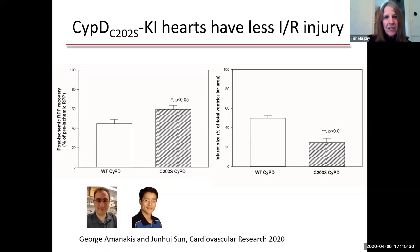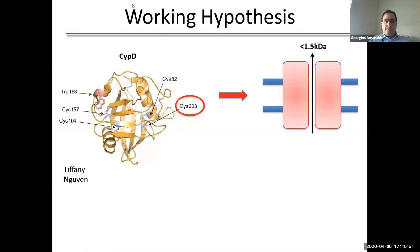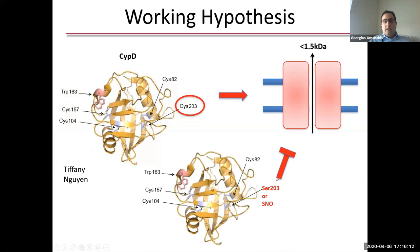Thank you, Tish. The working hypothesis we had is that cyclophilin D — and especially cysteine 202 in cyclophilin D — is responsible for targeting cyclophilin D to the PTP and triggering its activation. If we mutate cysteine 202 to a serine that cannot undergo a redox-sensitive post-translational modification such as oxidation, that would inhibit the targeting of cyclophilin D to the PTP. Or if that cysteine was previously S-nitrosylated, it would be shielded from further oxidation and would also be protective. Under conditions of calcium overload or oxidative stress, mitochondrial cyclophilin D is targeted to the inner mitochondrial membrane.